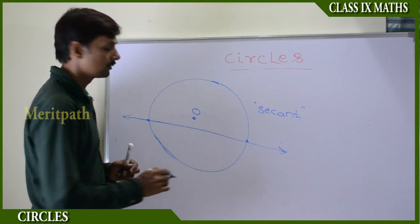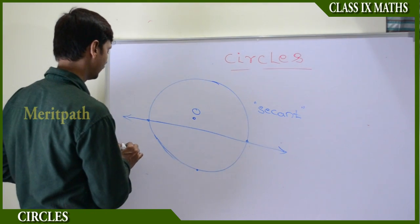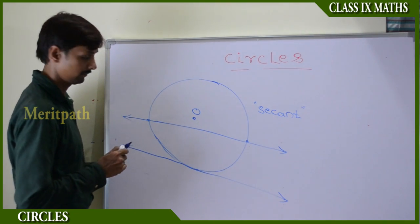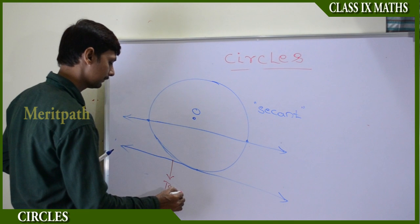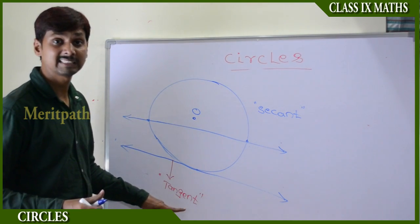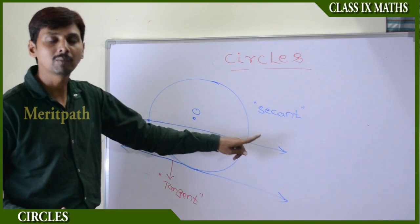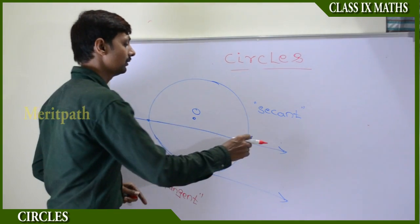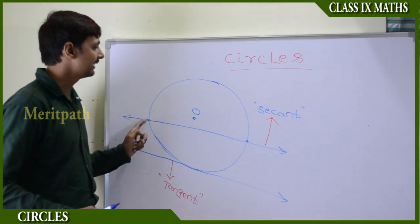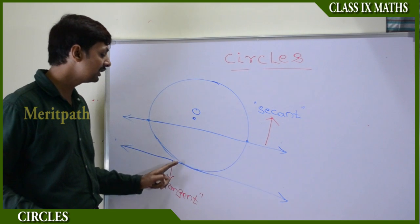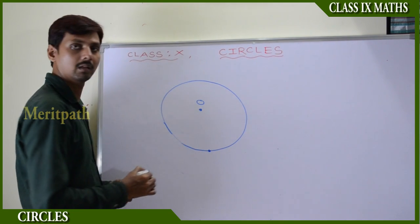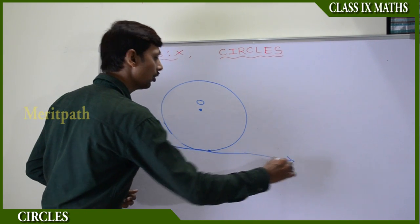Take a point on the circle and draw a line passing through it — when we draw a line which is touching the circle at only one point, it is called a tangent of the circle. A line joining two points on the circle, intersecting it at two points, is called a secant of the circle. There is a difference between secant and tangent: a secant intersects the circle at two points, but a tangent touches the circle at only one point. A line passing through a point on the circle and touching it there is called a tangent to the circle.